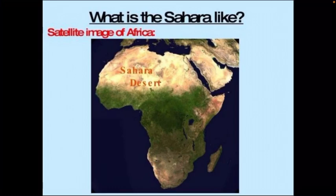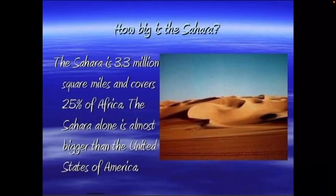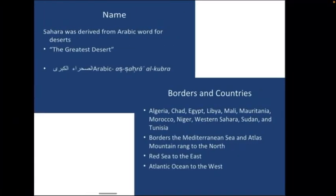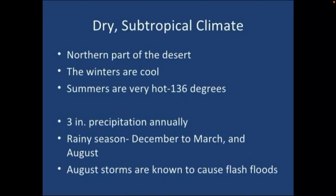The Sahara is not entirely a sandy desert. Only about one-fourth of it is covered with vast stretches of sand. There are extensive areas of pebbles and gravel. The climate is generally hot and dry. The highest temperature in the world, 58 degrees Celsius, has been recorded here at Al-Azizia in Libya.